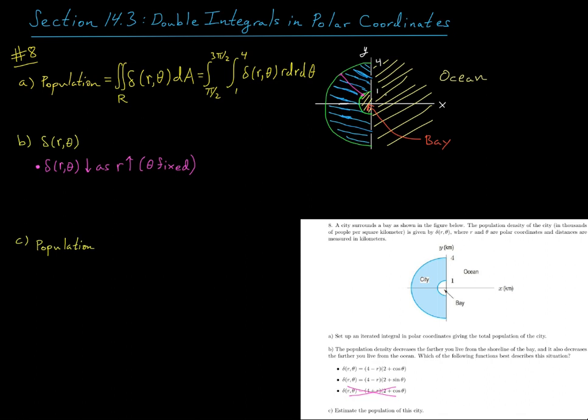Okay, now we also know that the density is going to decrease the farther we live from the ocean. So now imagine being close to the ocean, say over here, and now moving away from the ocean, and I'm going to fix my radial distance.